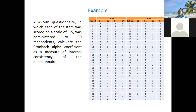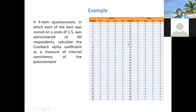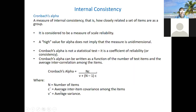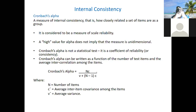If the questions are related — if there's internal consistency — they should vary together. As one varies higher, the other should vary higher also. So the covariance captures that. To calculate covariance, you have to pair the questions. In the Cronbach's formula, C means the average inter-item covariance — when you calculate the covariance for each pair and take the average.